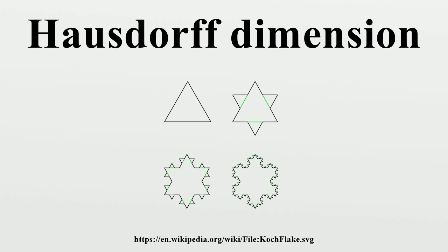For fractals that occur in nature, the Hausdorff and box-counting dimension coincide. The packing dimension is yet another similar notion which gives the same value for many shapes, but there are well-documented exceptions where all these dimensions differ.